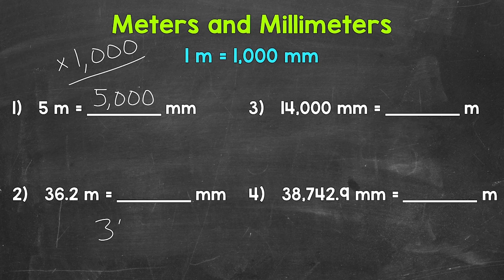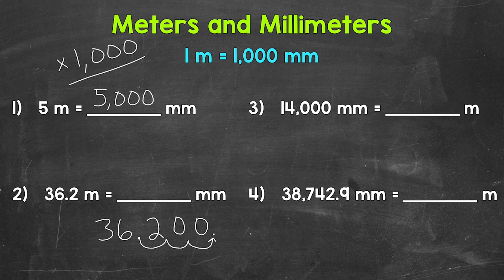When we multiply something by one thousand, each digit of that number shifts three places to the left — the value of the number increases by one thousand. In other words, we multiplied by one thousand. So let's move the decimal in order to push all of our digits to the correct place. So again, move the decimal three times to the right to multiply by one thousand. I'm going to rewrite 36 and two-tenths, and then move that decimal once, twice, and three times to the right. Fill these gaps with zeros, and that's our answer: 36,200. So 36.2 meters equals 36,200 millimeters.